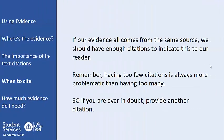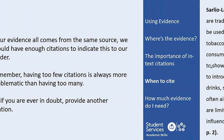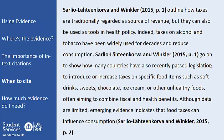Therefore, if all or much of the evidence in the paragraph comes from the same source, then we would expect to have a few citations indicating this. Remember, having too few citations is always more problematic than having too many. So if you're ever in doubt as to whether to provide another citation for the same source, then just provide one. As you can see, we don't need to provide a citation for every single sentence, but to any reader it will be clear that the information contained within this paragraph all comes from the same source.